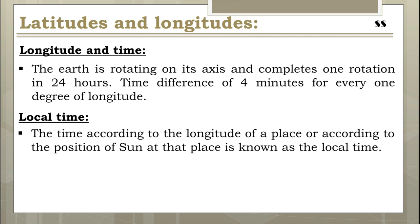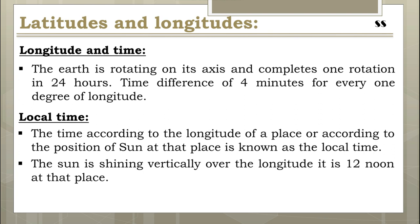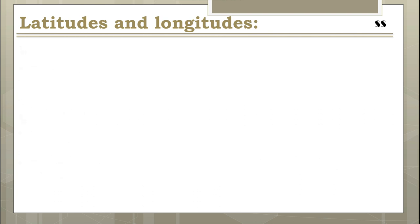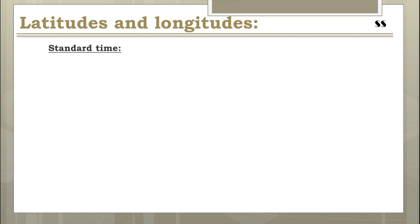The time according to the longitude of a place, or according to the position of the Sun at that place, is known as local time. It is based on the local meridian passing over that place. When the Sun is shining vertically over a longitude, it is 12 noon at that place. All places situated on the same meridian have the same local time, and every longitude has its own local time.